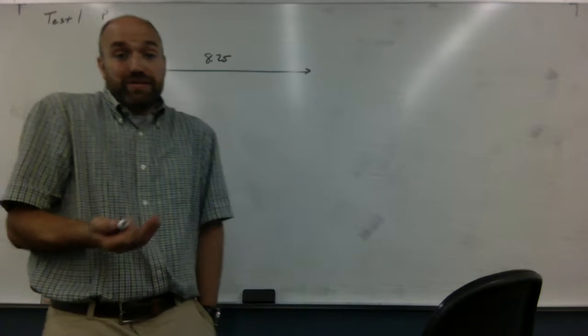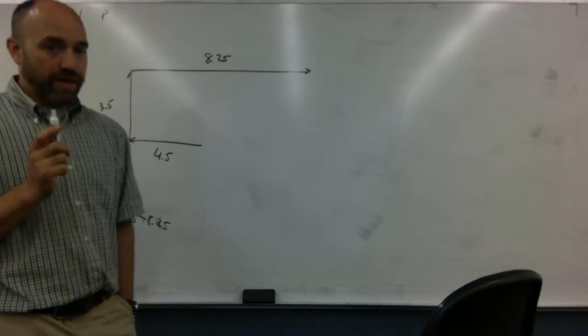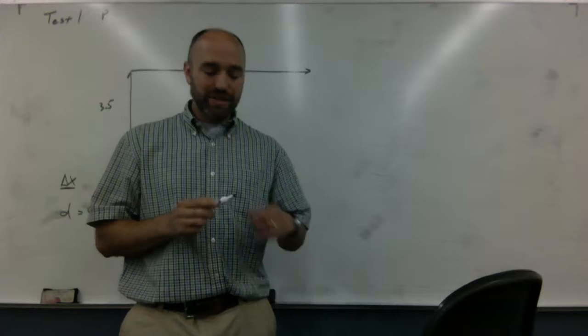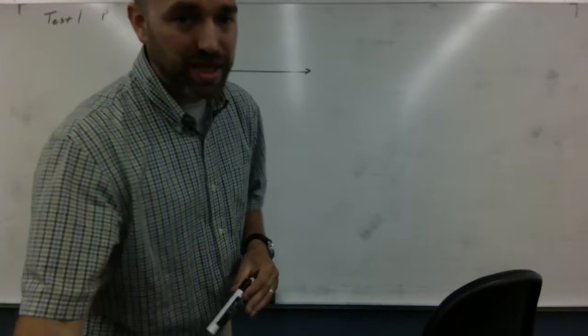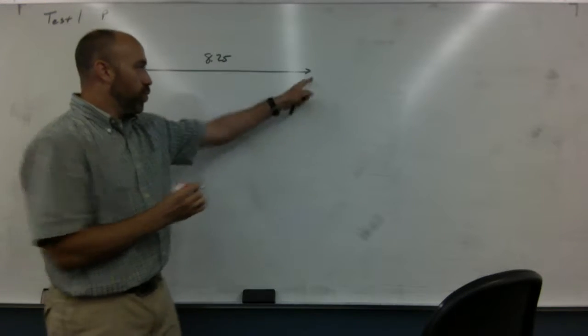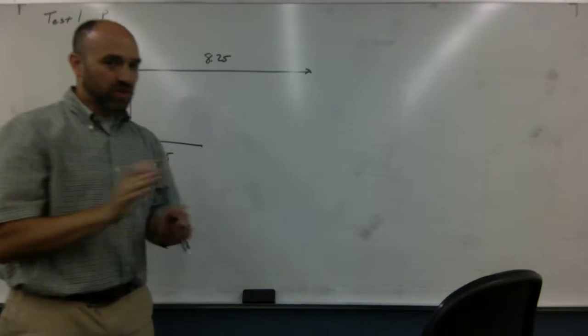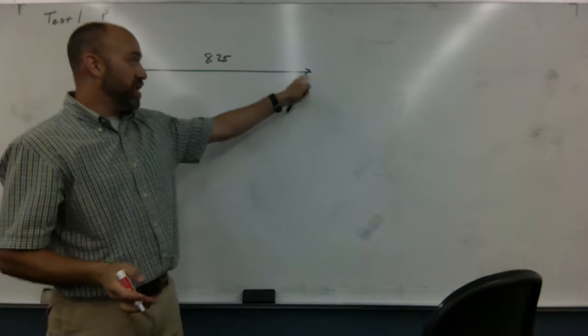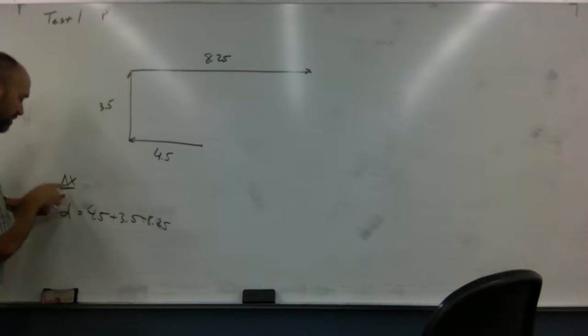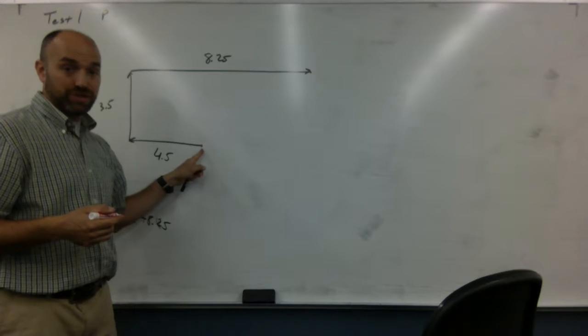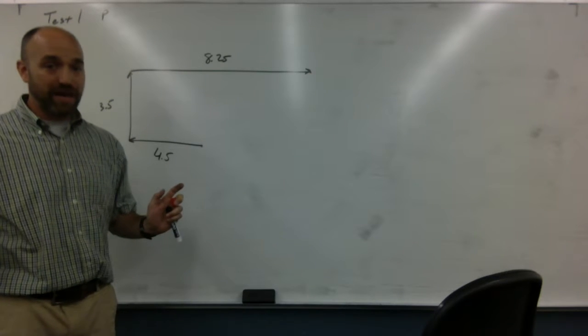Now the other one's trickier. Displacement is a trickier question because displacement concerns itself with where did you start and where did you end—that's all it cares about. It doesn't care about how you got there. It just says you started here and you ended here. That's what this delta is, that triangle there. That means final position minus initial position. It doesn't care about anything that happens between.